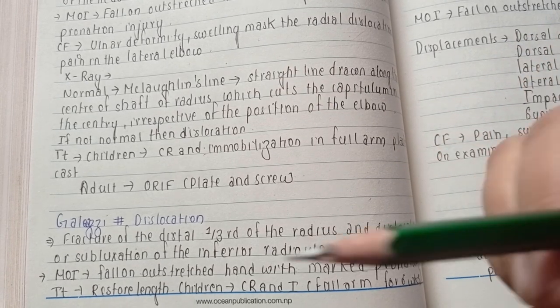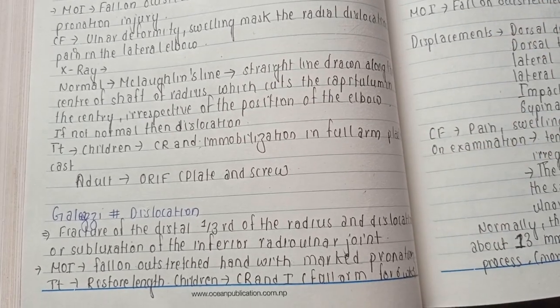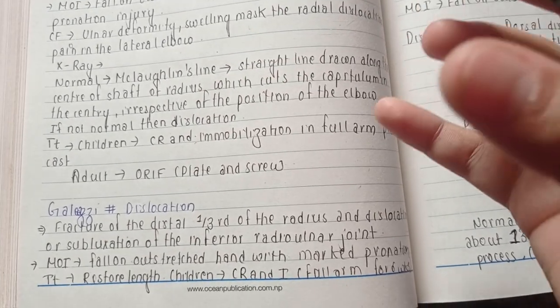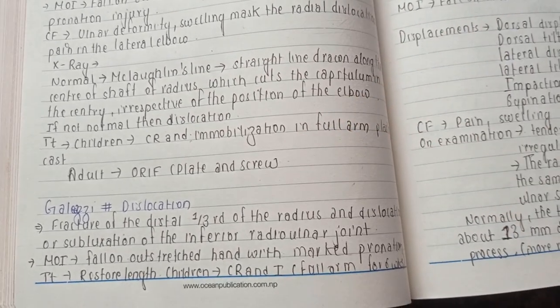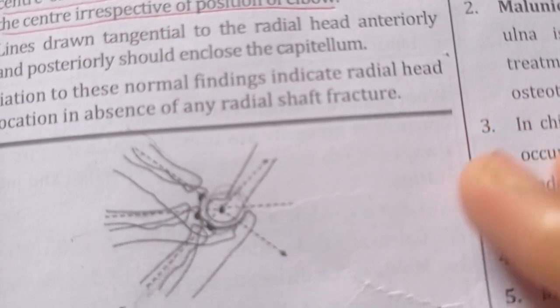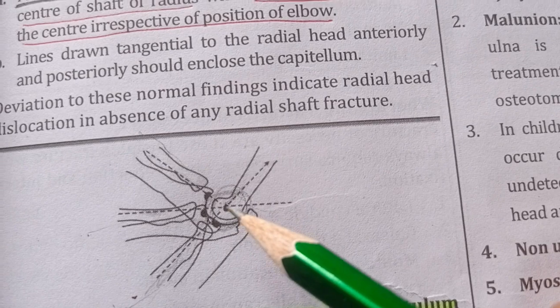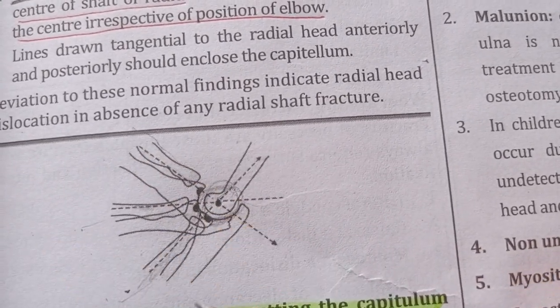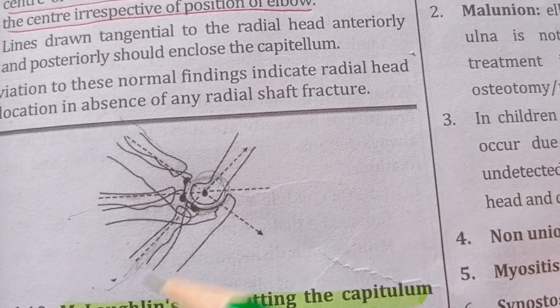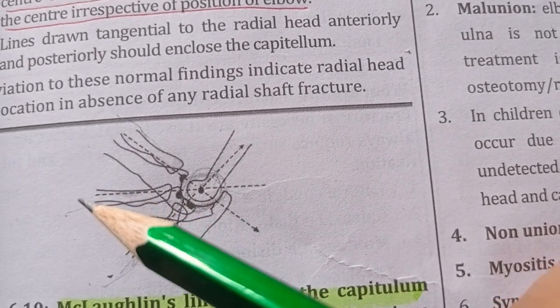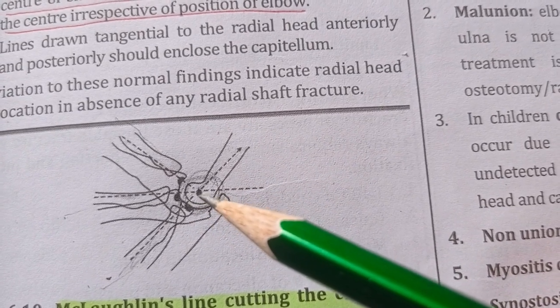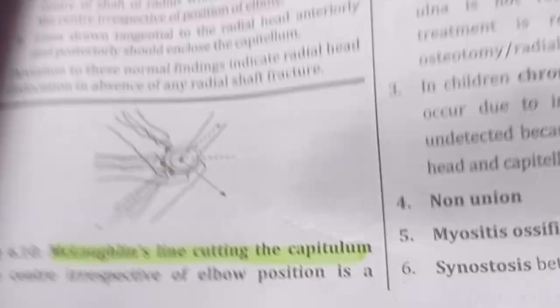When the elbow is in any position, when we draw a straight line along the shaft of the radius, it cuts the capitulum in the center. So let us see our figure here. As we can see, this is the capitulum and this is our radius. So irrespective of the position of our elbow, when we draw the line along the shaft of the radius, it cuts the capitulum in the middle part. Then if it is not normal, then we have Monteggia fracture dislocation.